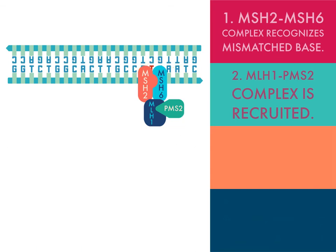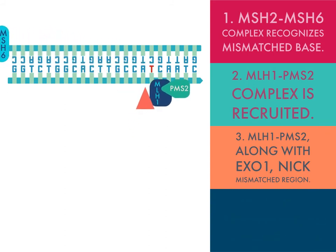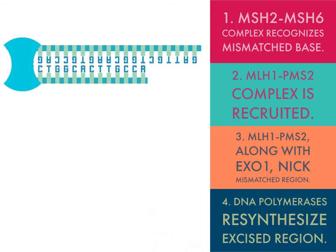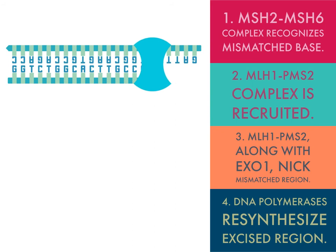Finishing the mechanism of mismatch repair: once combined, the four-protein complex of MSH2, MSH6, MLH1, and PMS2 recruits EXO1 and exonuclease. EXO1, along with the MLH1-PMS2 heterodimer, nicks the DNA strand containing the mismatched base and the affected region is removed. Finally, DNA polymerases use the intact strand as a template for re-synthesizing the excised region, and DNA ligase closes the nicks.